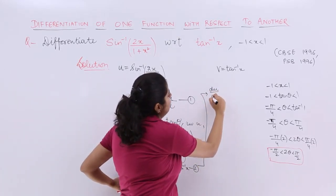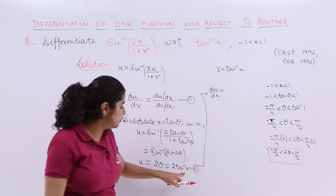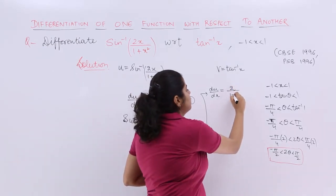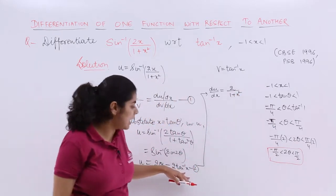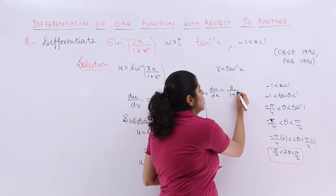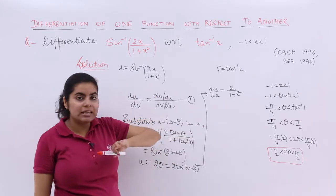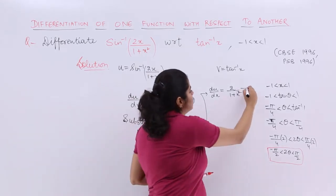So let's continue. I say my du by dx is equal to the differentiation of equation number 2 with respect to x. So it is 2 upon 1 plus x square. That happens for tan inverse x differentiation 1 upon 1 plus x square. Now du by dx has been done.